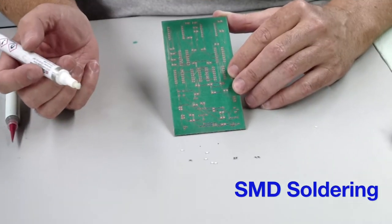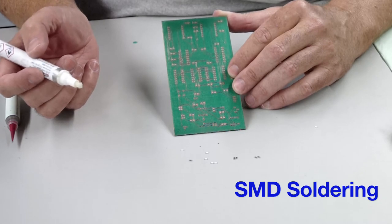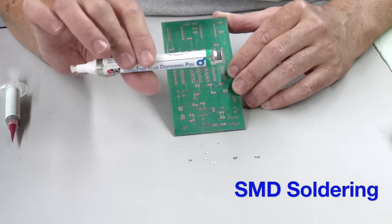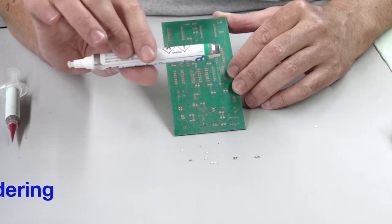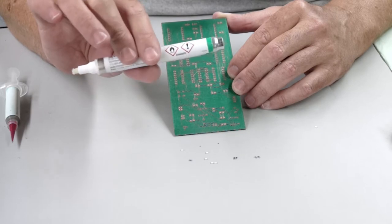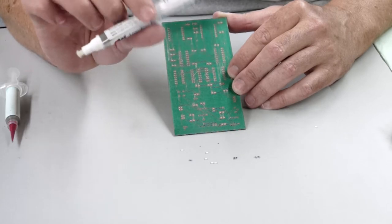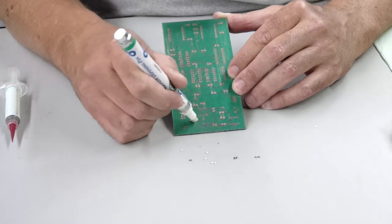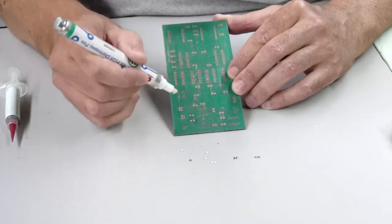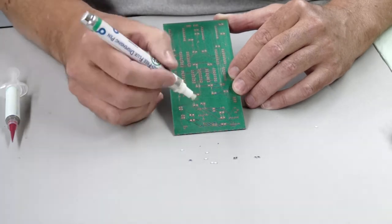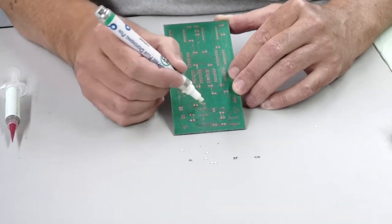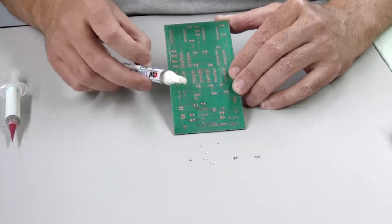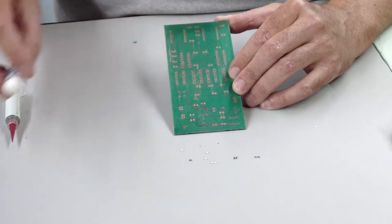Now we're going to prepare the board for surface mounting the parts. The first thing we're going to use is a little flux pen. Flux is a compound that is used to clean the copper, and it makes the solder adhere better to the board. So I'm going to take wherever I have little pads, and I'm just going to put a little dab of flux on there. You'll see the flux is kind of a clear liquid that applies on there.